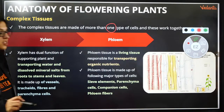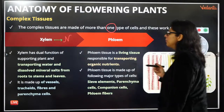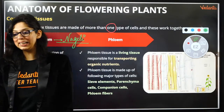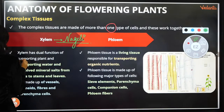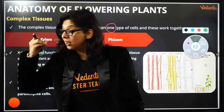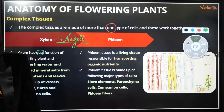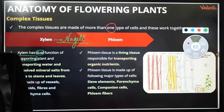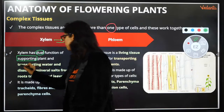Complex tissues are made up of more than one type of cell. First we're going to look at xylem, then phloem. The word 'xylem' was introduced by Nageli in 1858. Xylem has a dual function — it is non-living, and because it's non-living it has lignin. Lignin supports the plant and gives it strength. So it has a function of supporting the plant as well as transporting water and dissolved mineral salts.